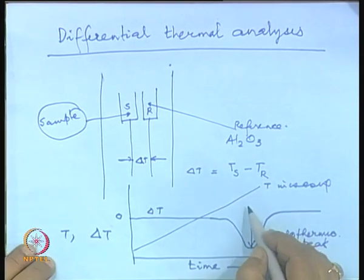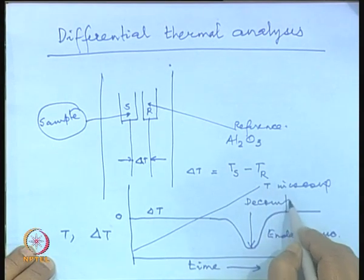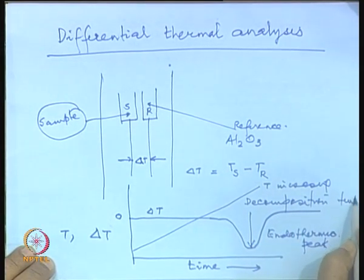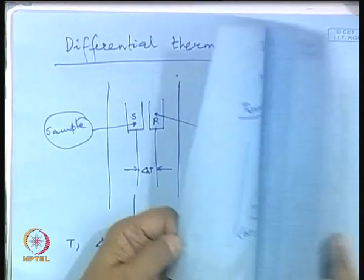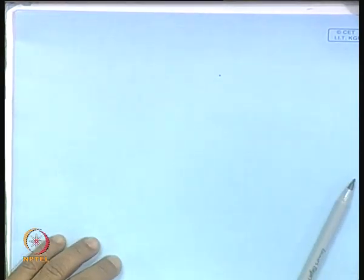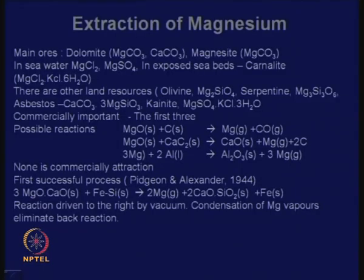This is known as the decomposition temperature, which will be around 660°C. So these are two common methods — thermogravimetry and DTA — for finding out the decomposition temperature of magnesium carbonate. Once we have roasted, or rather decomposed the dolomite, we have MgO·CaO, and then we can reduce it by ferrosilicon. Basically, the reducing agent is silicon — iron is not the reducing agent.